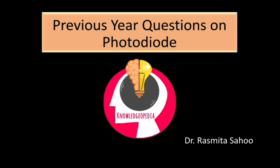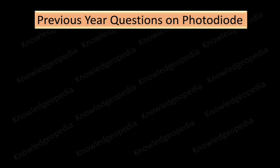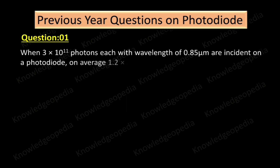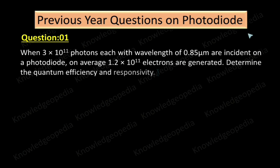Hello students, today I will be discussing some previous year questions based on photodiode. These questions came in JNTUH examinations. Coming to the first question: when 3×10¹¹ photons each with wavelength of 0.85 micrometer are incident on a photodiode, on average 1.2×10¹¹ electrons are generated.